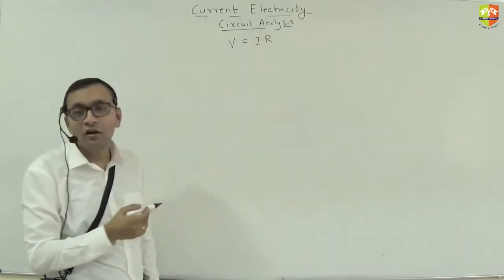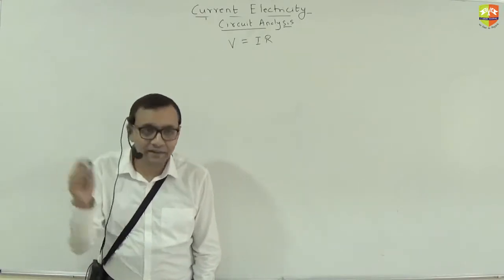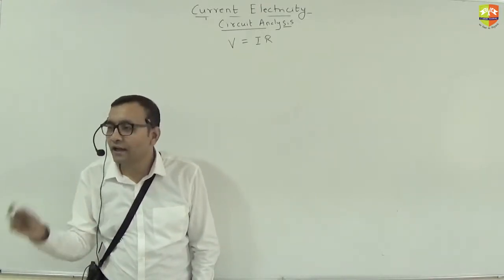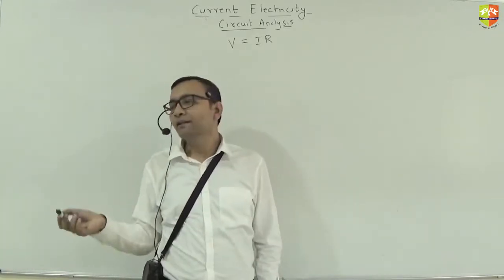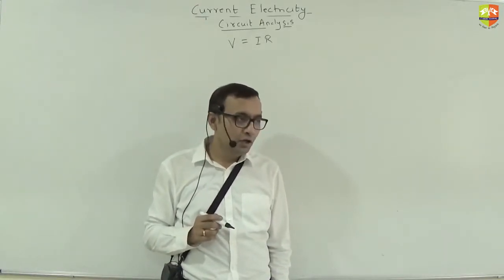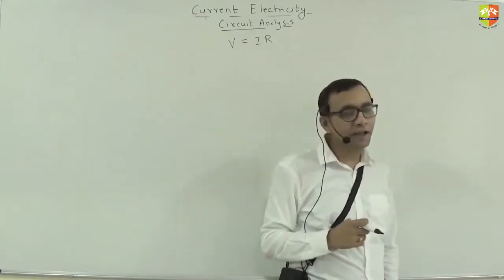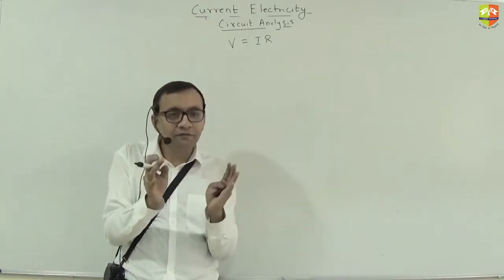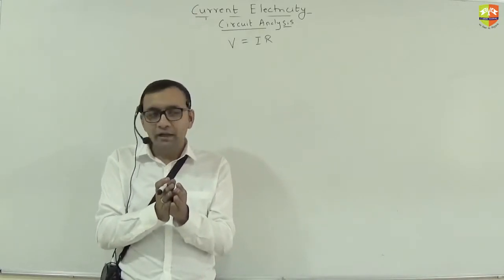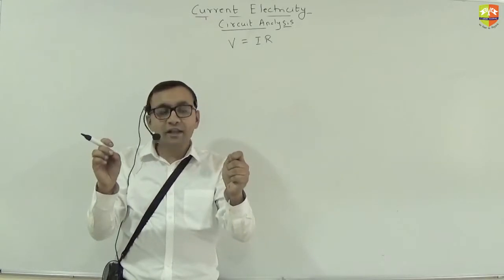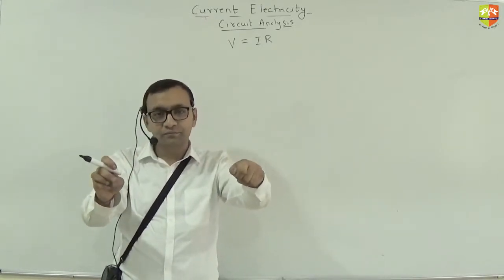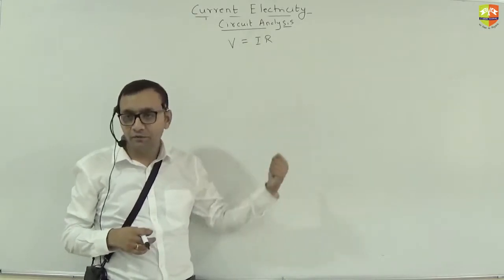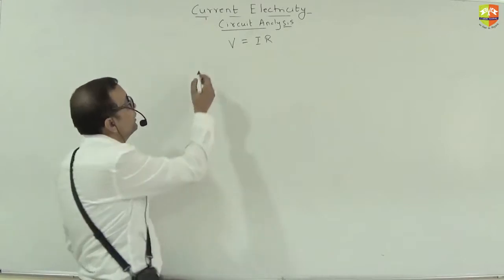Ohm's law connects voltage across a resistance and the resistance value. But the limitation of Ohm's law is that it deals with only one resistance at a time — you cannot analyze multiple resistances together using it. This leaves us with the question: can we somehow convert an entire network of resistances and treat it as a single equivalent resistance connected there?